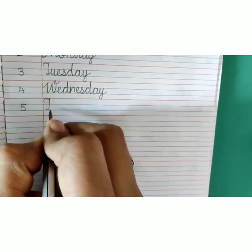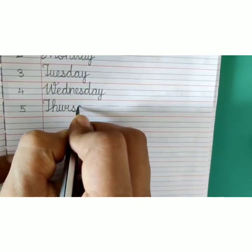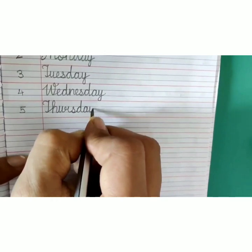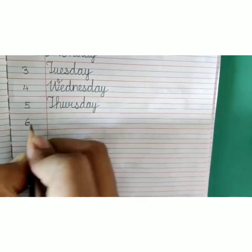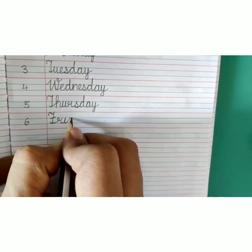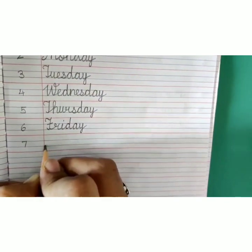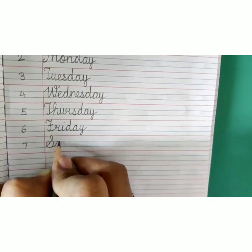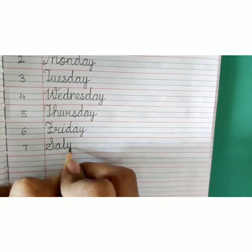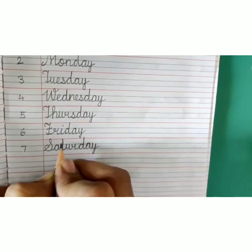Number 5, capital T-H-U-R-S-D-A-Y, Thursday. Number 6, capital F-R-I-D-A-Y, Friday. Number 7, capital S-A-T-U-R-D-A-Y, Saturday.